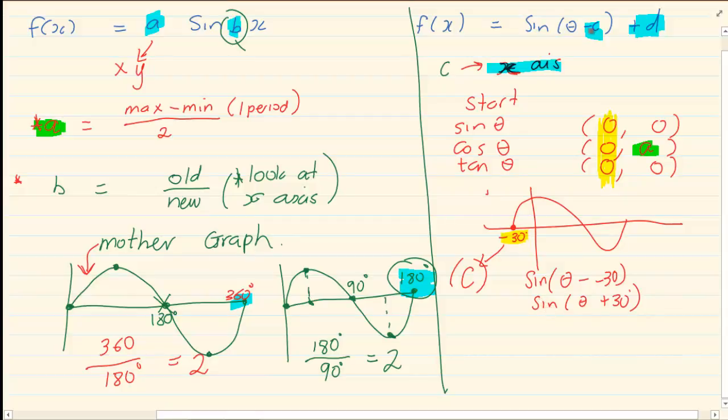We have sin theta minus. This minus is from the equation. And then minus 30 is from the graph. So my final answer is sin theta plus 30. But in the exam, if they ask you what is the value of C, then the value of C is minus 30. The C is dependent on the starting point of the x-axis.